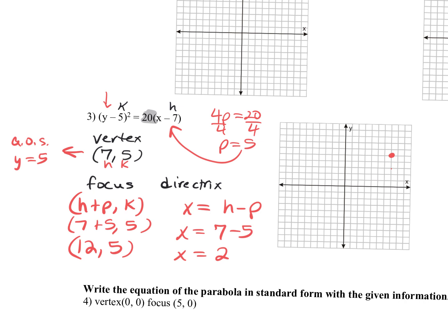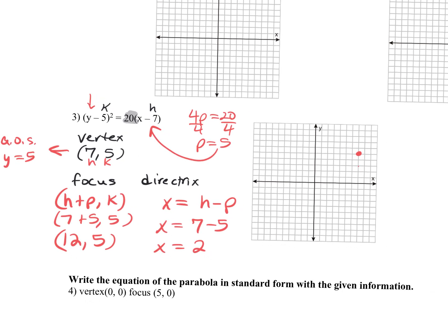There's my vertex. Then I can graph my focus — it's going to go off the graph here: 8, 9, 10, 11, 12 — I can put my focus about here. Also graph the directrix in black: x equals 2. Remember, the directrix is always behind the parabola. Make sure your parabola surrounds the focus.